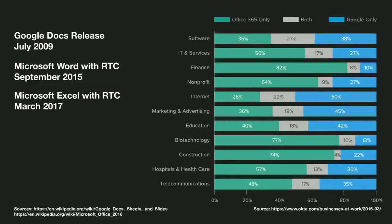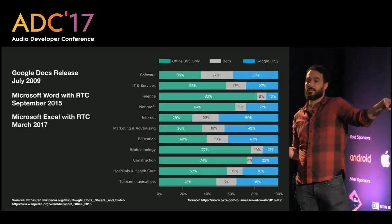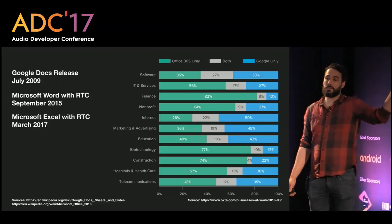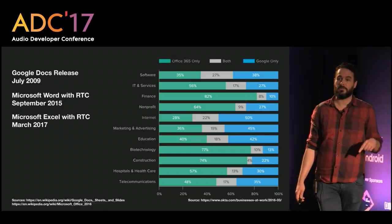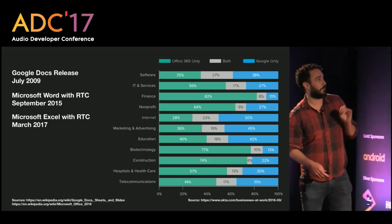Looking at this from a market point of view, it's really interesting. Google Docs was released in 2009. Depending on the field, you can see the market shares between Microsoft Office and Google. In software, internet, marketing and advertising, Google managed to get almost half of the market — from 2009 to 2016, that's almost half the market in just seven years. That's really big.